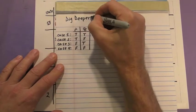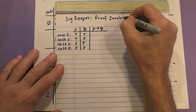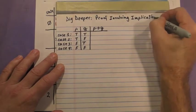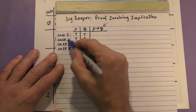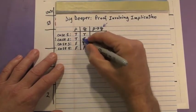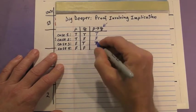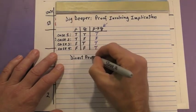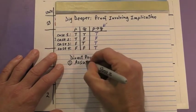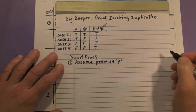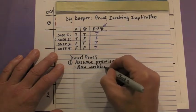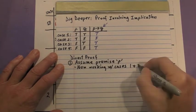Let's take a few moments to dig a little deeper into proof involving implication. As a reminder, here's the truth table for P implies Q. Again, in a direct proof, we are assuming premise P, meaning that we are working with cases 1 and 2 from the truth table.